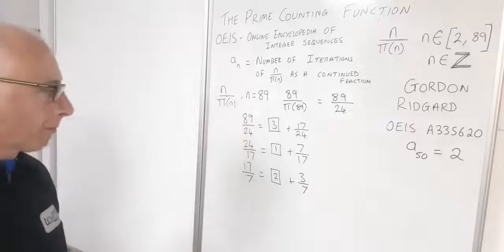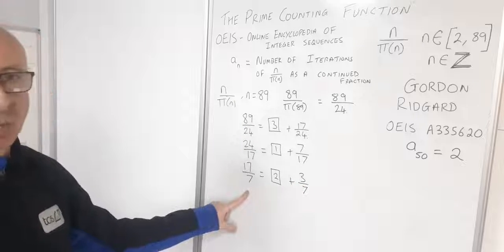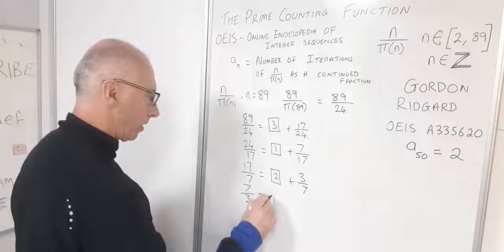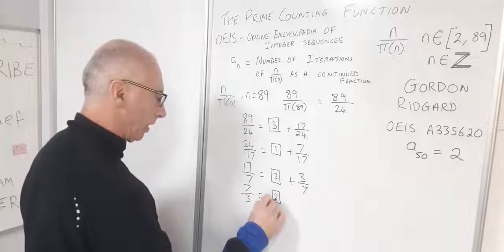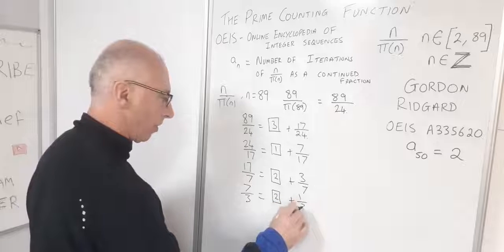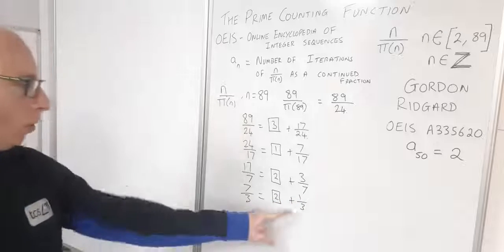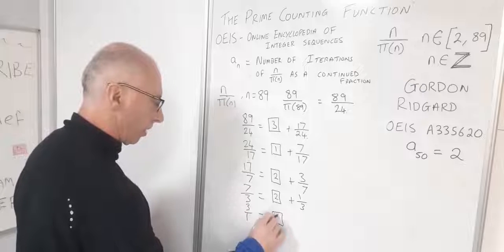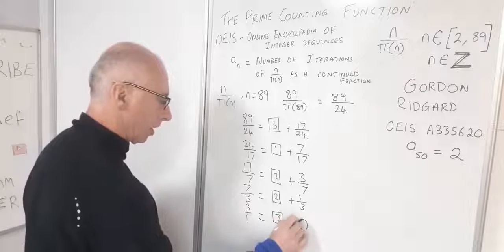Now let's bring this down in reciprocal format. So now we've got 7 over 3. That's going to leave us with 2 again and then 1 over 3. Now 1 over 3, that's going to give us 3 over 1 which just leaves us with 3 plus 0.